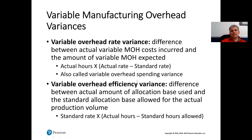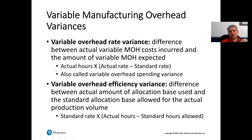The rate variance is the difference between the actual variable manufacturing overhead costs incurred and the amount of variable manufacturing overhead expected. To compute the rate variance — this is kind of like a price variance — we're looking at the actual hours multiplied by the actual rate minus the standard rate. This is also called the variable overhead spending variance.